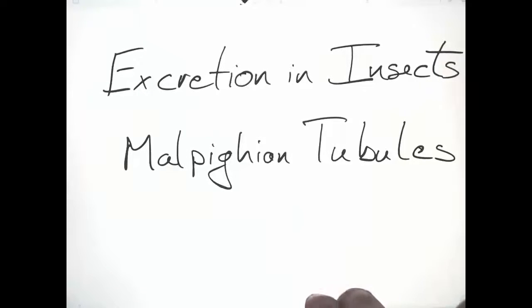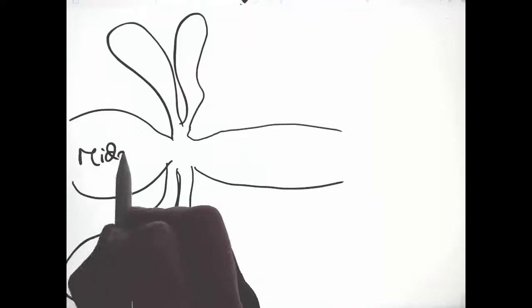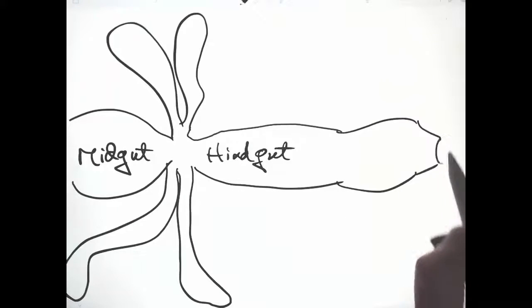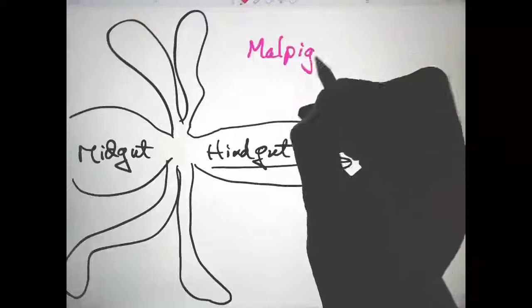In insects, Malpighian tubules combine in large numbers into the boundary between the midgut and hindgut, before the rectum, and finally the anus.